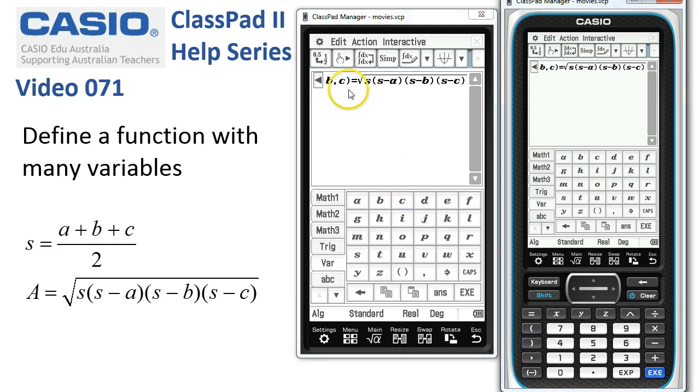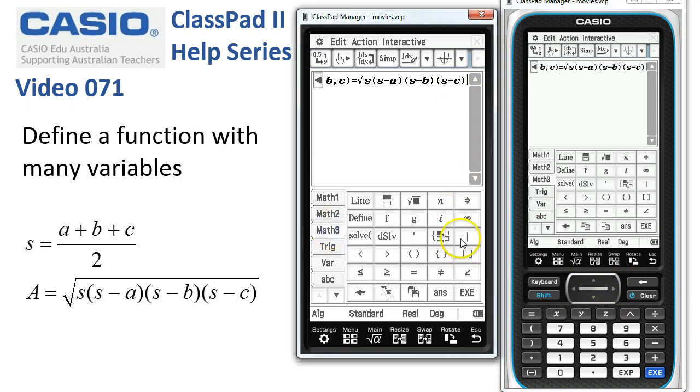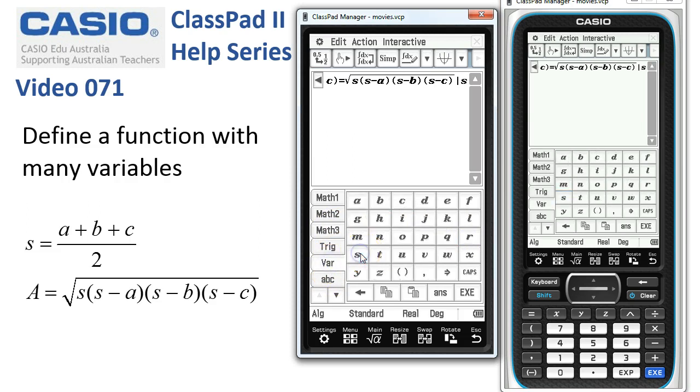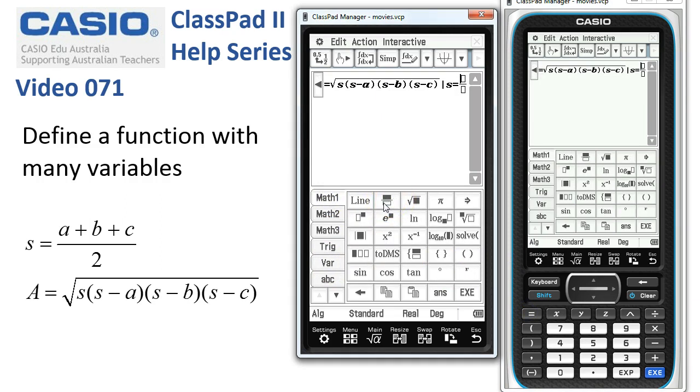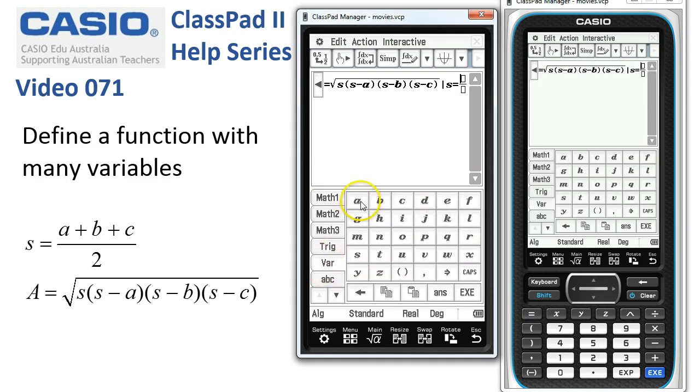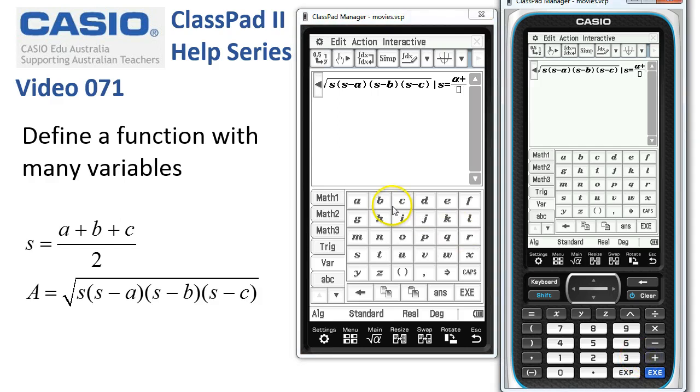Now we still haven't told ClassPad what s is so I'm going to tap outside of the square root there now and put from the Math3 given that and back to our variable menu that s is equal to—from Math1 I'm going to put the fraction template and back to the variable menu—a plus b plus c all divided by 2. And that's basically our function defined.